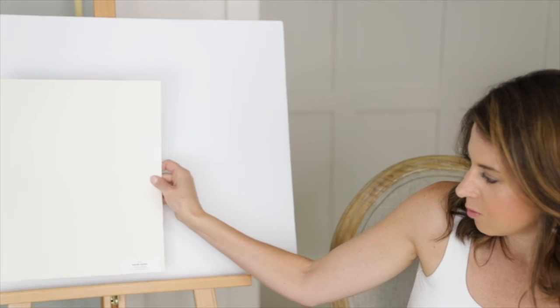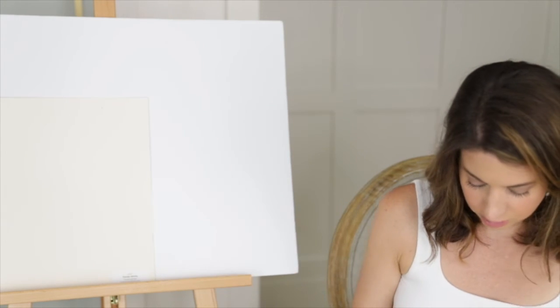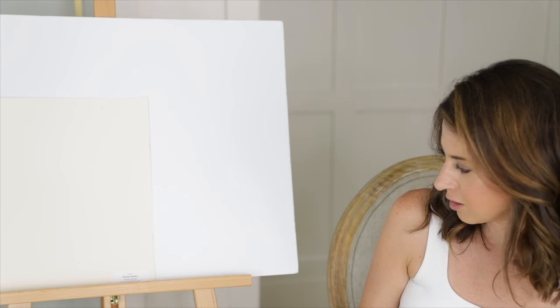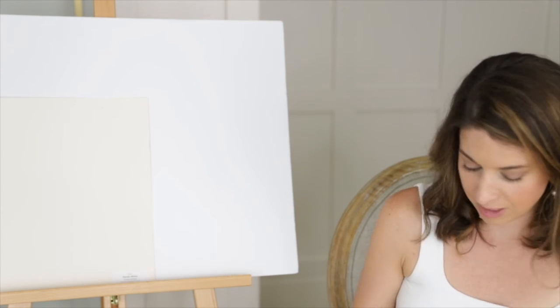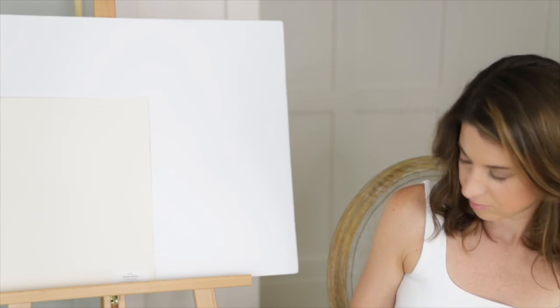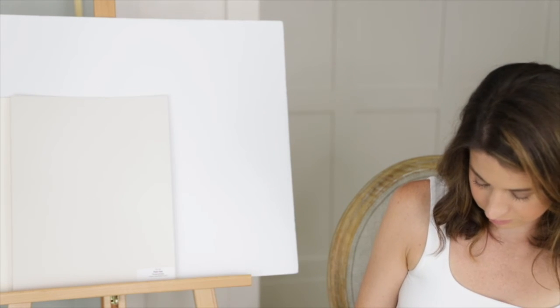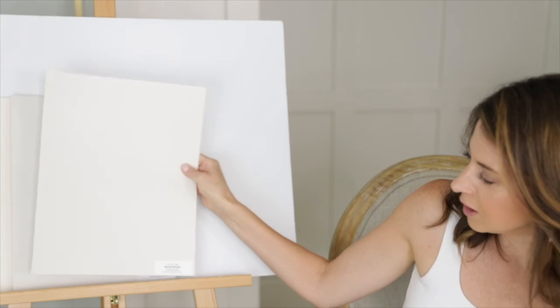So I just want to put these up one final time so that you can kind of get an idea of how they look in comparison with one another. So this is Panda White, Pale Oak. As you can see, the purple is practically screaming at you. Wind's Breath.